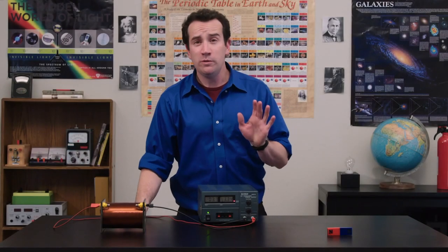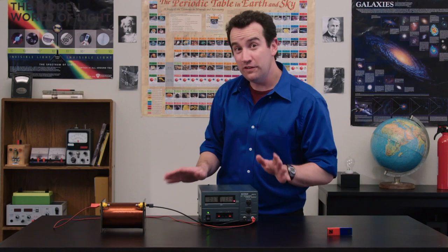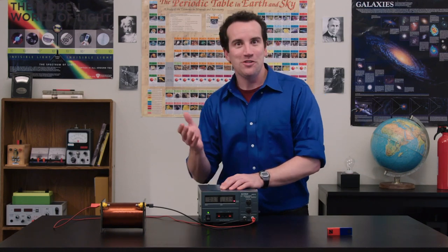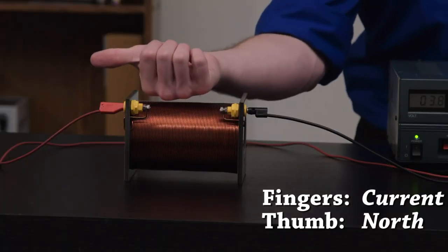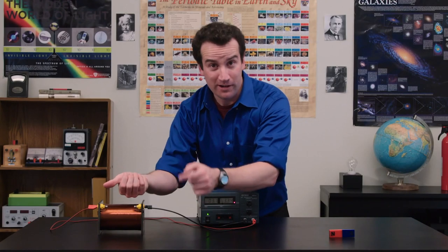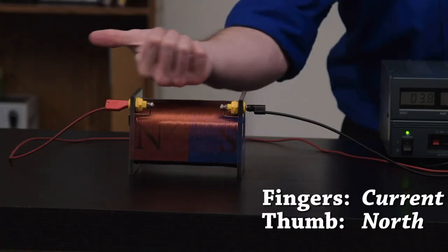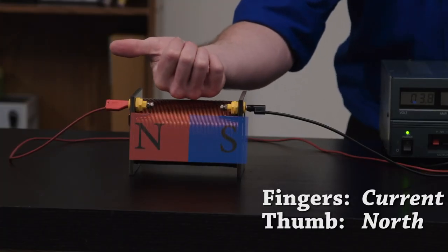But how can we predict what direction the field is pointed? With our right hand. Let your curling fingers be the direction of current flow, which is looping around. Then your thumb is the north end of the electromagnet.